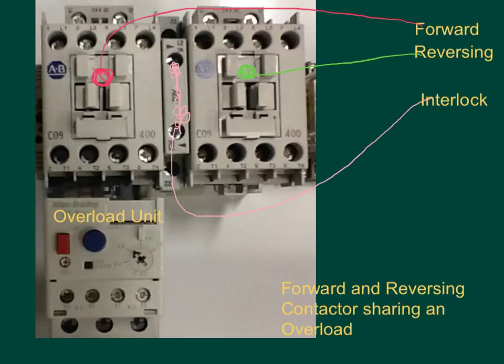Here's what our parts and pieces will look like. We've got a forward starter, we've got reversing starter. My interlock sandwiched right in between those two contactors. And then I have my overload unit here at the bottom. I only have one motor, so therefore I just need one overload unit.